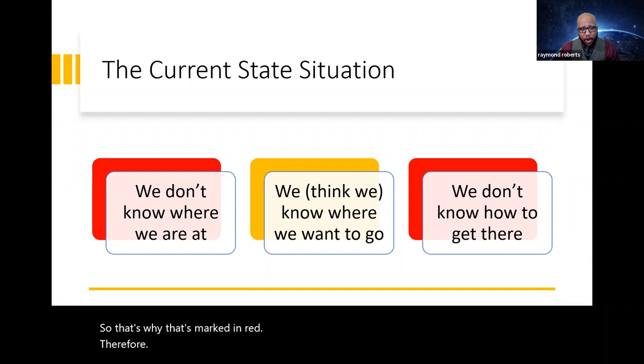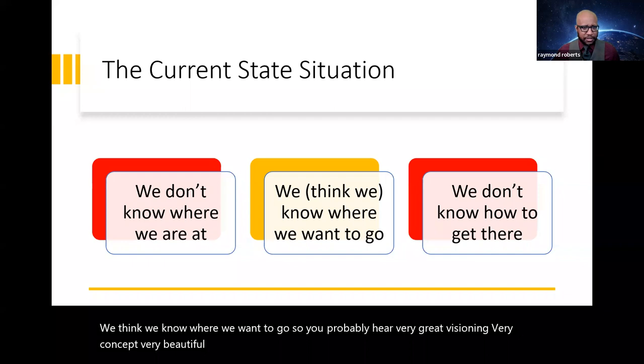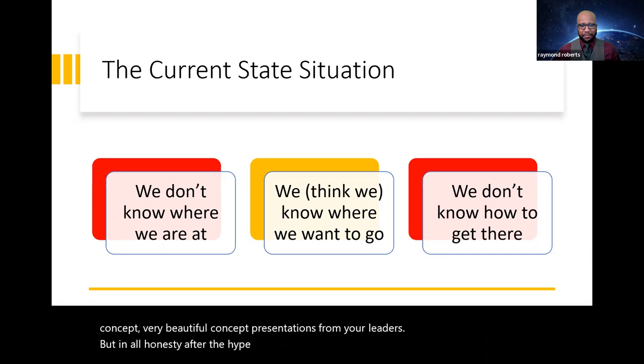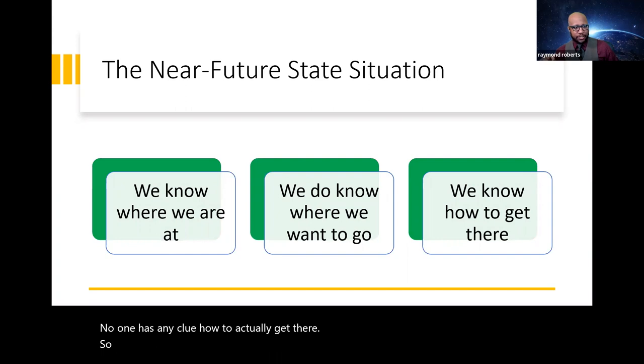Therefore, we think we know where we want to go. So you probably hear very great visioning, very beautiful concept presentations from your leaders. But in all honesty, after the hype subsides, no one has any clue how to actually get there. So here's the purpose of data theory and data strategy. If it works, the end state is we know where we are at. We do know where we want to go and we do have an idea how to get there.